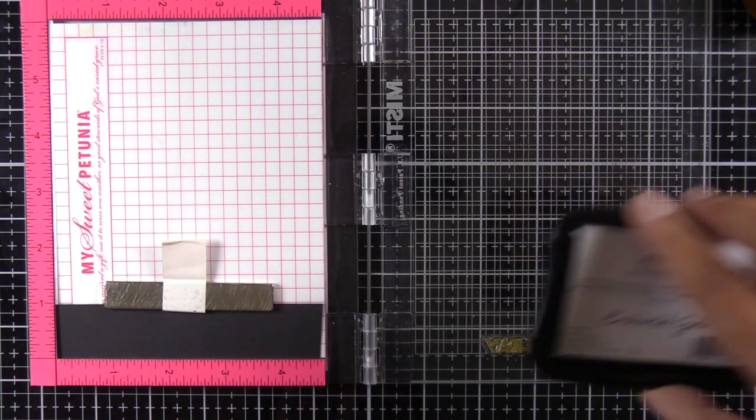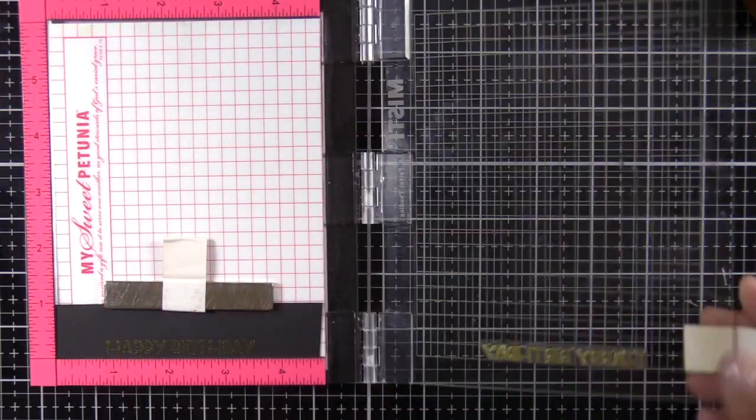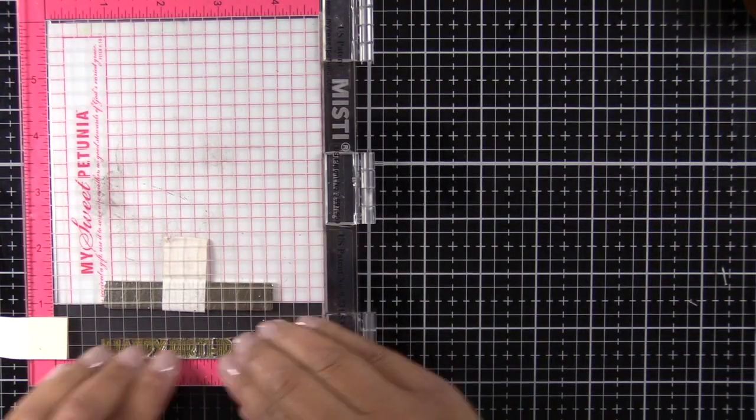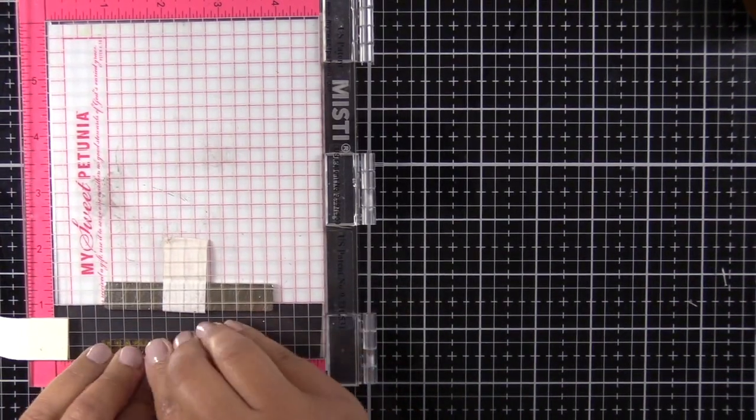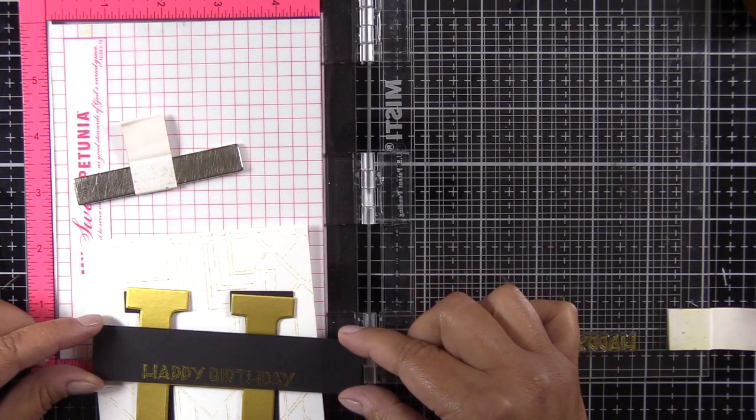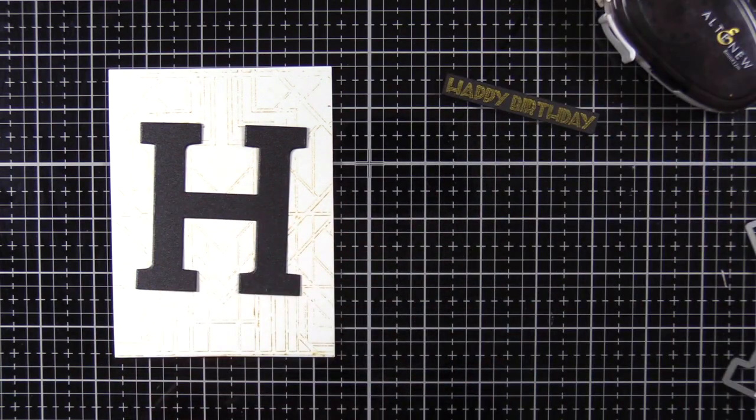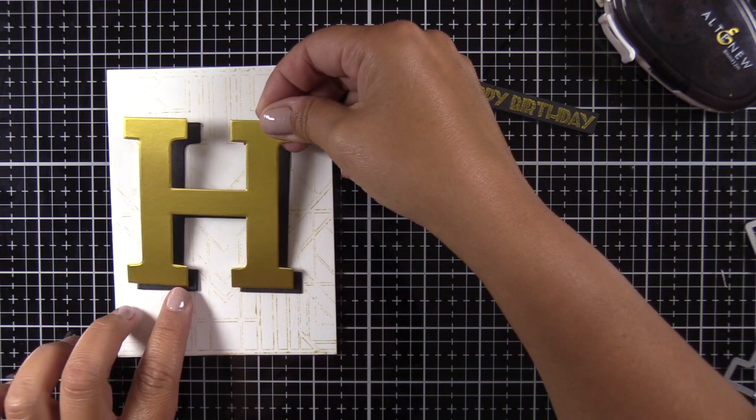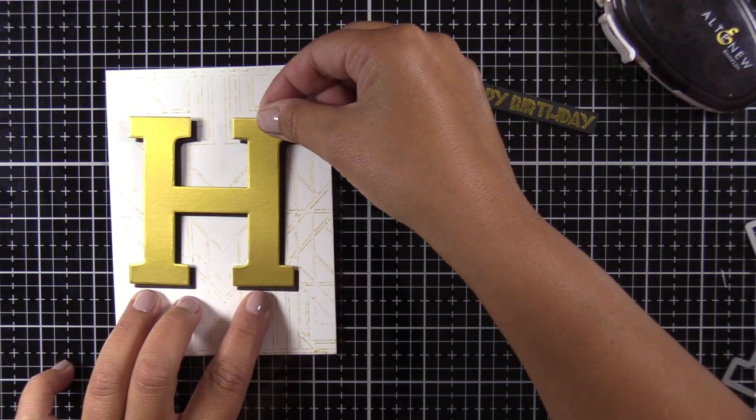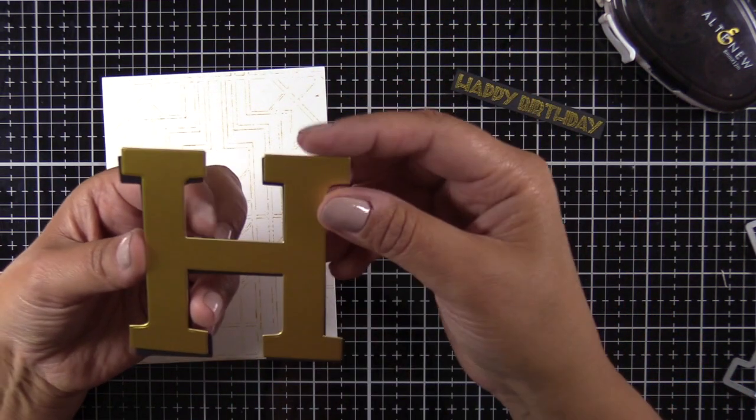Now I'll go ahead and clean up my surface. I'm going to take the enchanted gold pigment ink from Altenew and I'm going to stamp this happy birthday sentiment onto a strip of black cardstock. This sentiment is from their cupcake layering set. I can't remember the name of it, but as always I'll have all the products listed below. I've cut out an H from black cardstock and gold foil cardstock from Altenew.